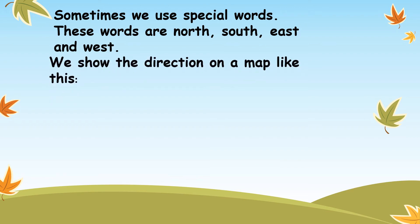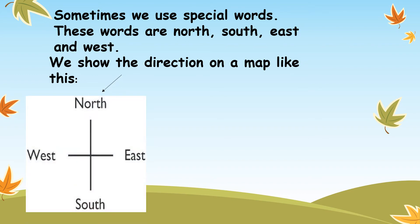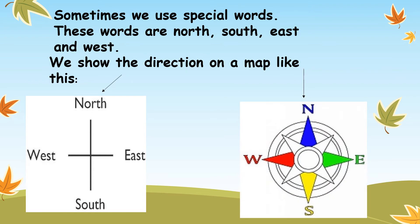Those special words are North, South, East, and West. We show the direction on a map like this — you can see here North, South, East, West. These words in short form are: N for North, E for East, W for West, and S for South. When you combine these letters, they make the new word NEWS. We show the direction on a map like this.